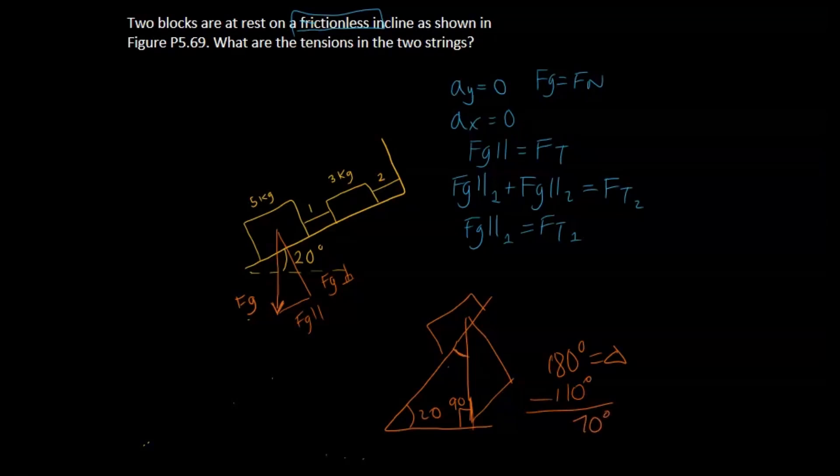So we know this side right here is going to be 70 degrees. And so this has to make a 90 degree angle, and so this would be our 20 degree angle. So because of that, our 20 degree angle would be right here. And so now we want to find Fg parallel because that's the component in the x direction that will help us find what needs to be counteracted by the string.